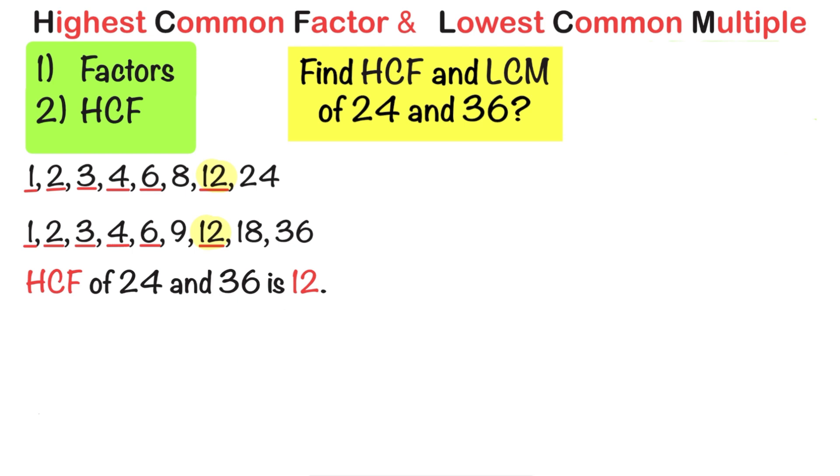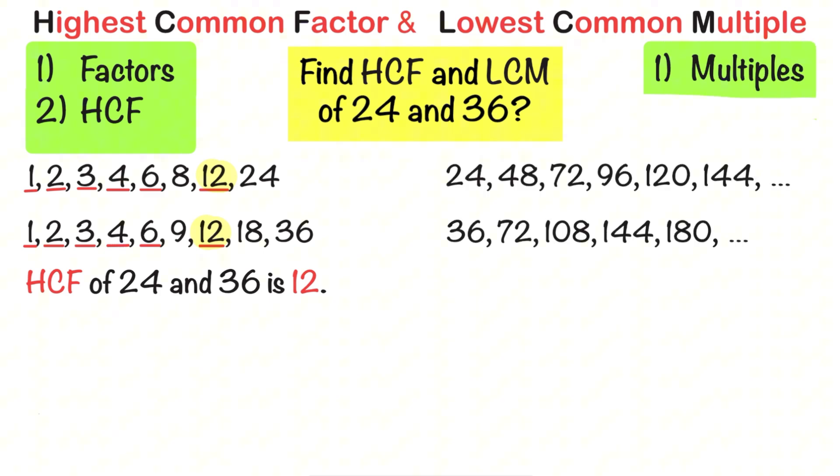Now let's move on to the lowest common multiple. Step 1. List the first few multiples of both numbers. Then look for the common multiples.